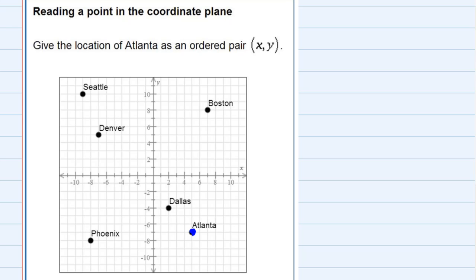Giving it as an ordered pair means we have to give the coordinates. The first one is the left and right movement from the origin to get to that point. The second number in our ordered pair is the up and down movement needed to get there from the origin.